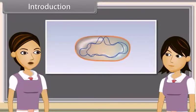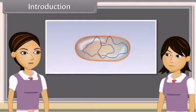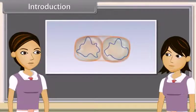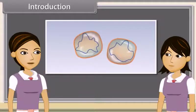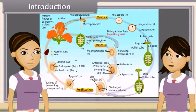Reproduction is the ability of all organisms to produce young ones similar to themselves in most characters. The process which involves fusion of male and female gametes to form a new individual is known as sexual reproduction.